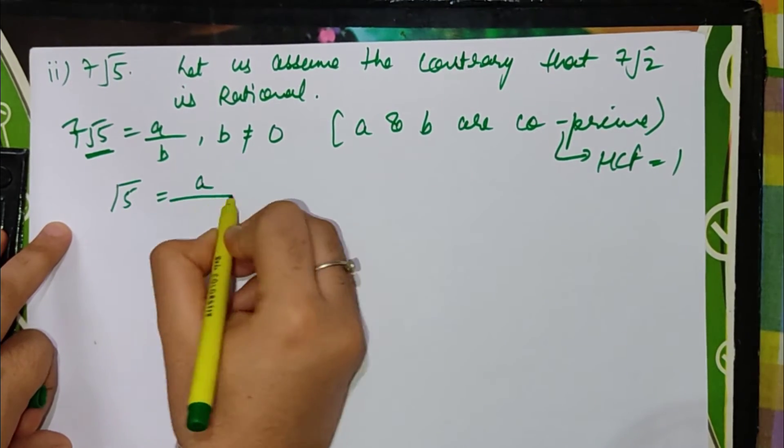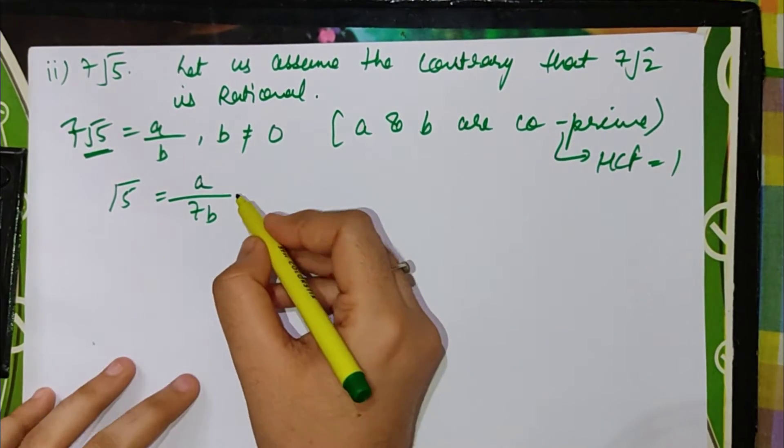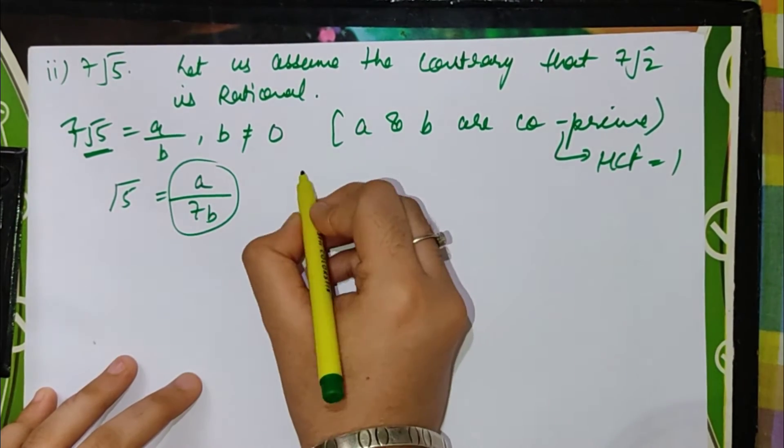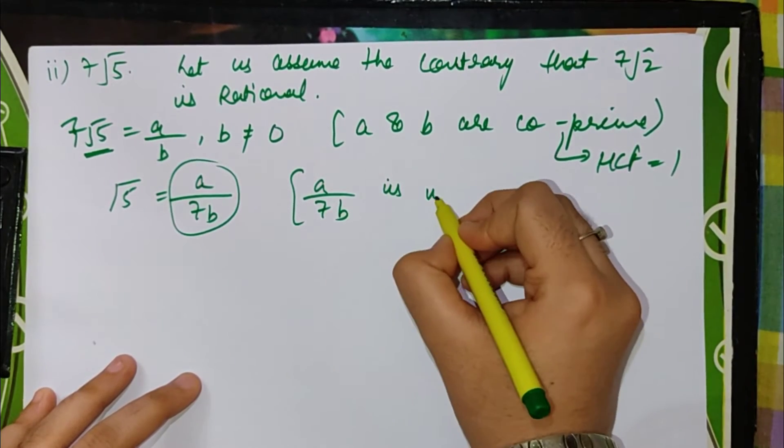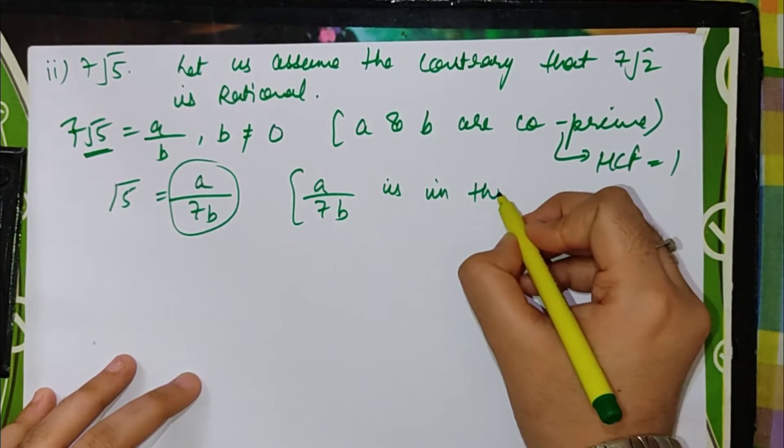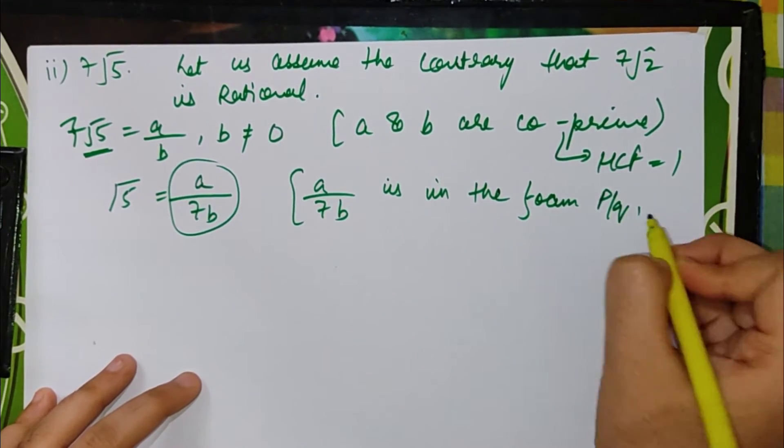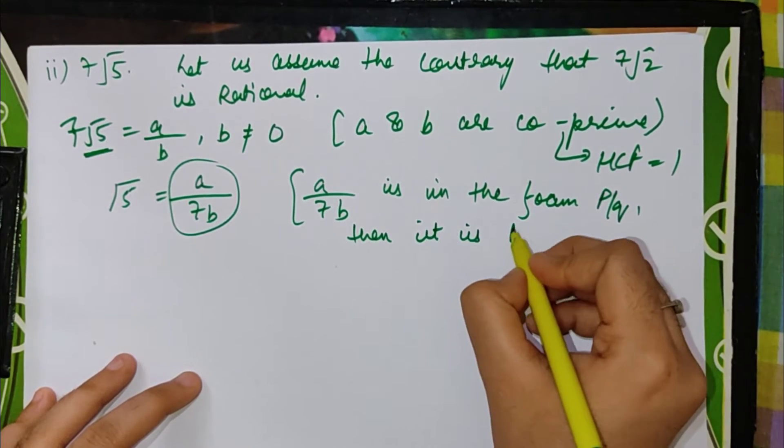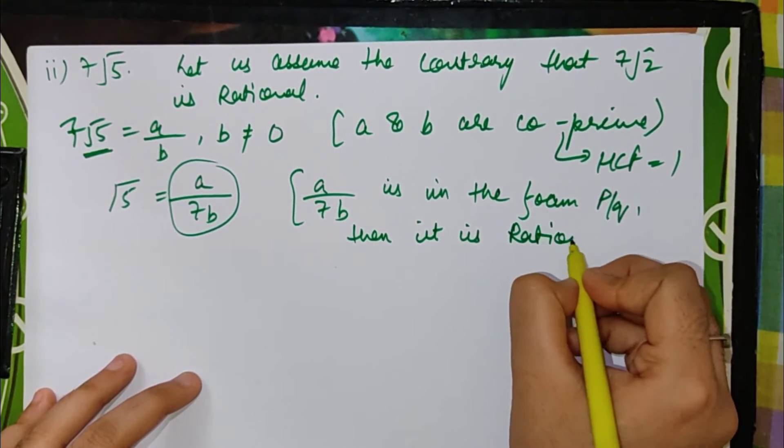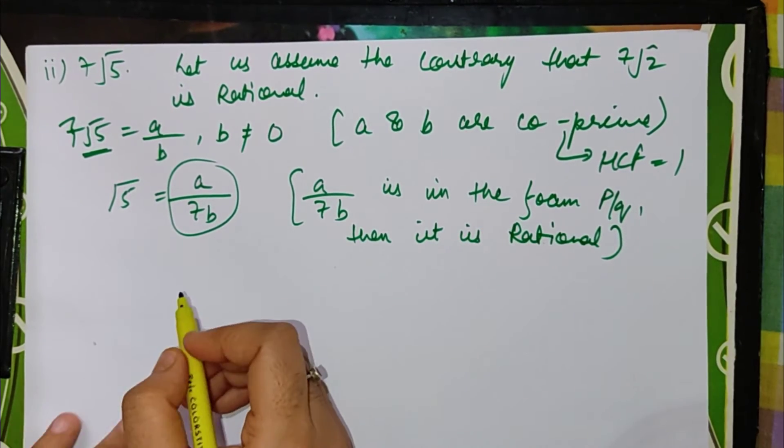Now this means a upon 7b is in the form p by q, then it is rational. Why? Because this is p by q and where q is not equal to 0.